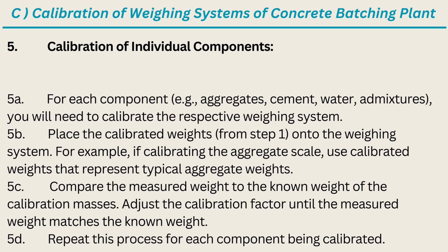Step 5: Calibration of Individual Components. A. For each component — e.g. aggregates, cement, water, admixtures — you will need to calibrate the respective weighing system. B. Place the calibrated weights from Step 1 onto the weighing system. For example, if calibrating the aggregate scale, use calibrated weights that represent typical aggregate weights. C. Compare the measured weight to the known weight of the calibration masses. Adjust the calibration factor until the measured weight matches the known weight. D. Repeat this process for each component being calibrated.